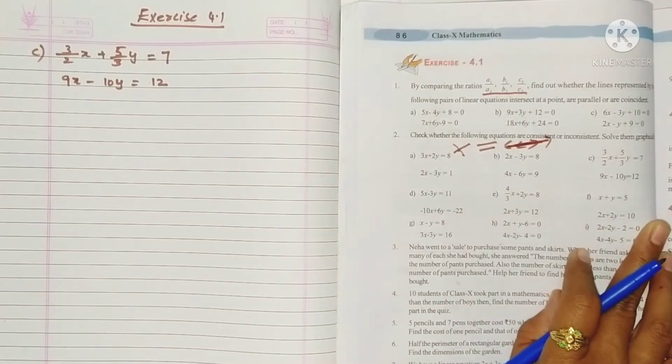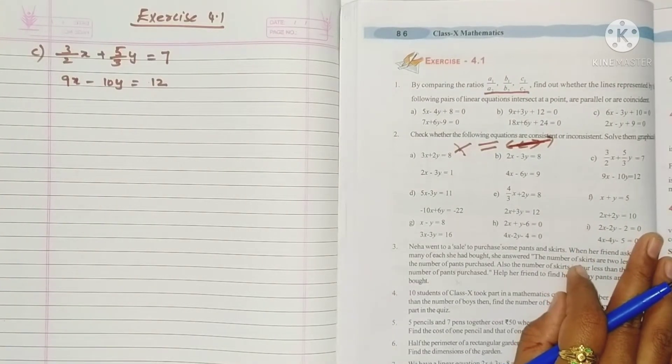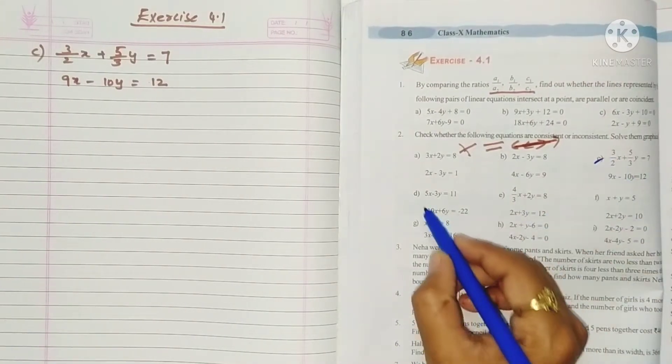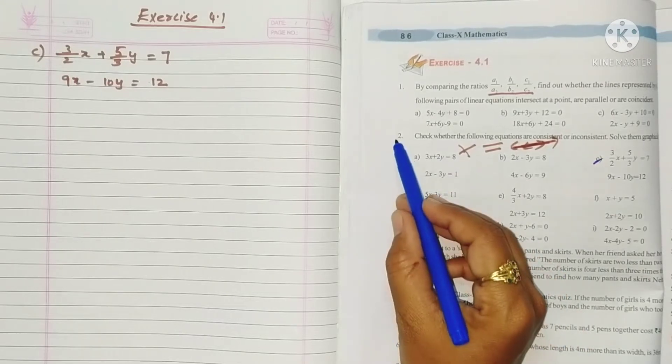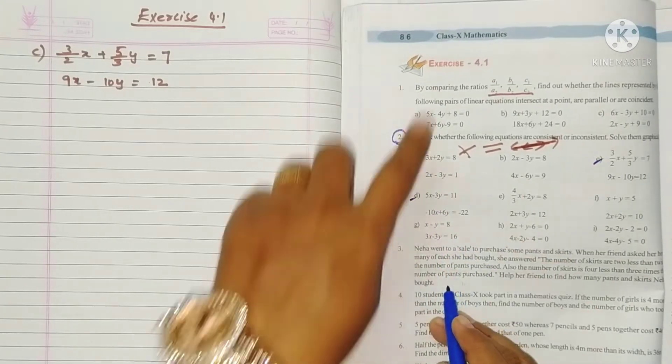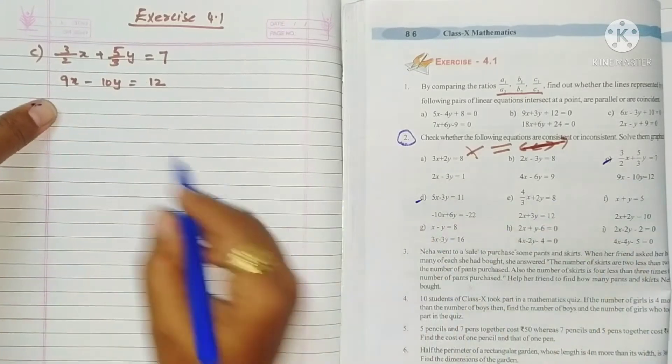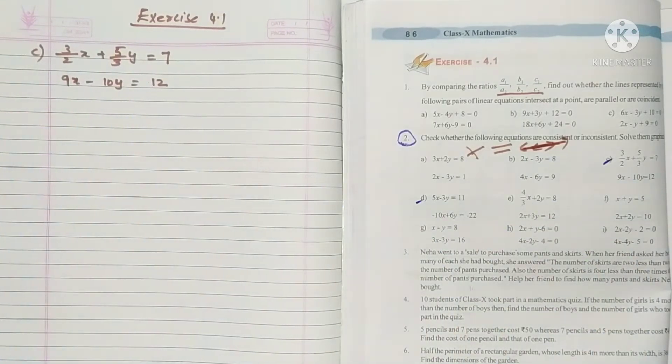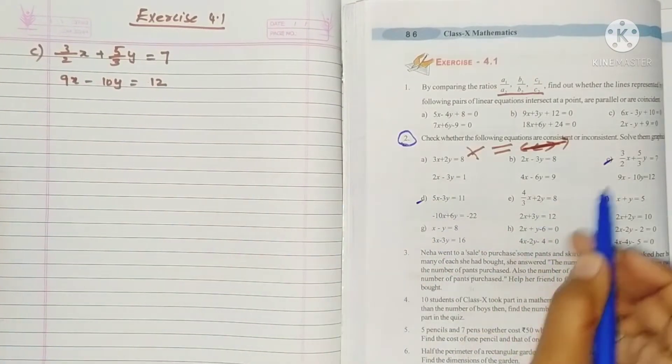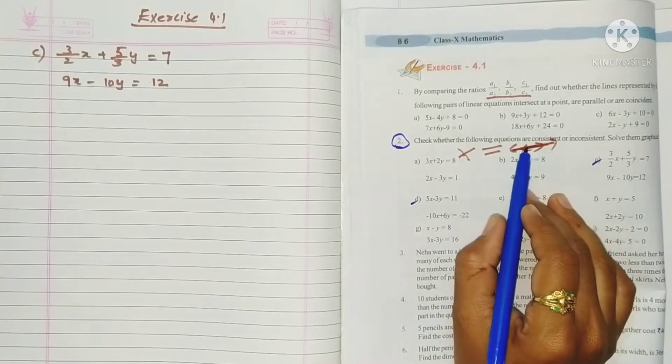Hello students, welcome to my channel. Today in this video we are going to see problems C and D in problem number 2, exercise 4.1. So this is the problem - we have to draw the graph and determine whether these two lines are consistent or inconsistent.